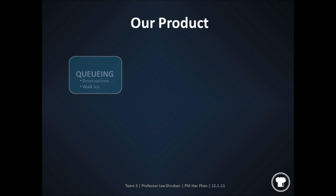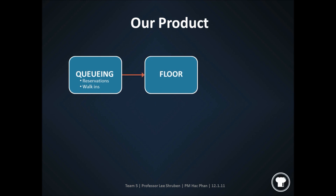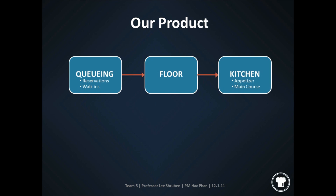The queuing system consists of both reservations, which can be made in advance, as well as walk-ins. This moves to the floor where patrons will be seated according to their party size, which then moves to the kitchen where orders will go in for both appetizers as well as the main course. These food types will then be sent back to the floor, and any future orders will be sent back to the kitchen again.